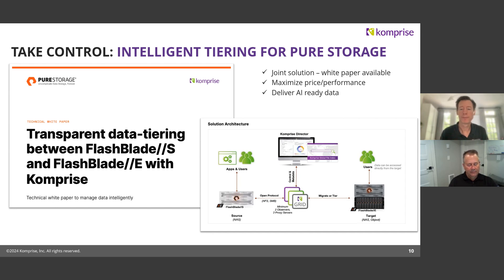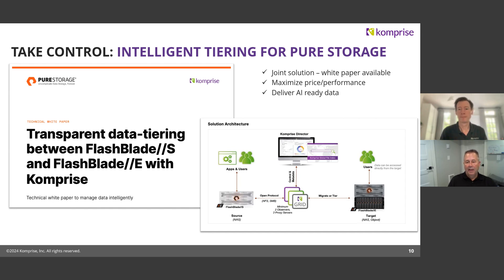This is getting a lot of interest in the market for the same reasons: customers want to control costs and right-place data on the right platform — based on access time, file type, etc. Data that needs extremely low latency and extremely high performance should stay on a high-performance class of storage. But files that are less critical after creation should be put on the right class of storage. It should be transparent and seamless to the end user, and more importantly, the files at their destination should be accessible from both the primary application storage and secondary applications for data mining. That's what we built.